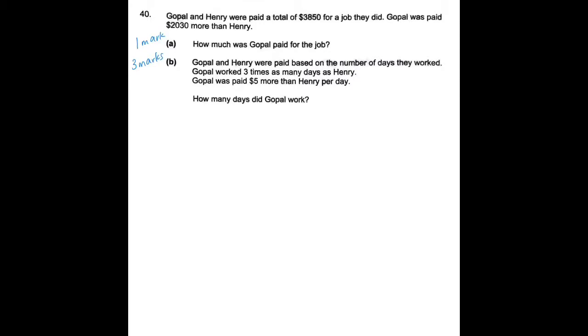Gopal and Henry were paid a total of $3,850 for a job they did. Gopal was paid more than Henry. How much more? $2,030 more. For question 1, they want us to find out how much Gopal was paid for the job. Pretty easy, but I will draw a model to help you understand. Gopal and Henry, these are the two people involved. Gopal was paid more, so I'm just going to draw his model such that it's longer than Henry's.